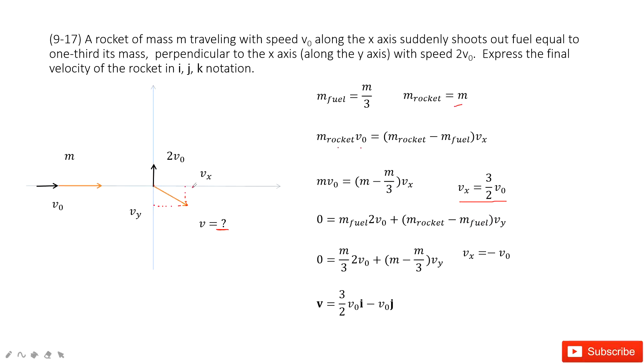And the next one, the linear momentum conserved vertically. Because initially, there is no vertical component. So zero. And finally, we have the fuel. It is the fuel, black one, fuel times 2v0. And plus this orange one, vy.